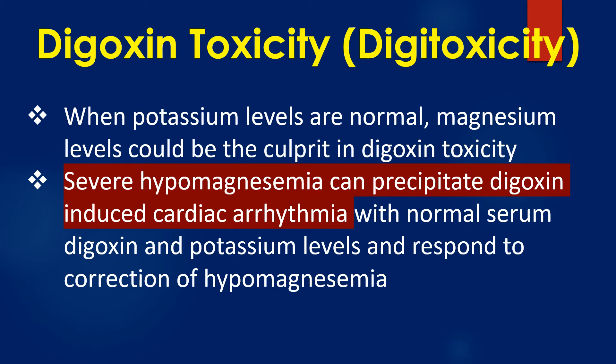Severe hypomagnesemia can precipitate digoxin-induced cardiac arrhythmia with normal serum digoxin and potassium levels, and will respond to correction of hypomagnesemia.